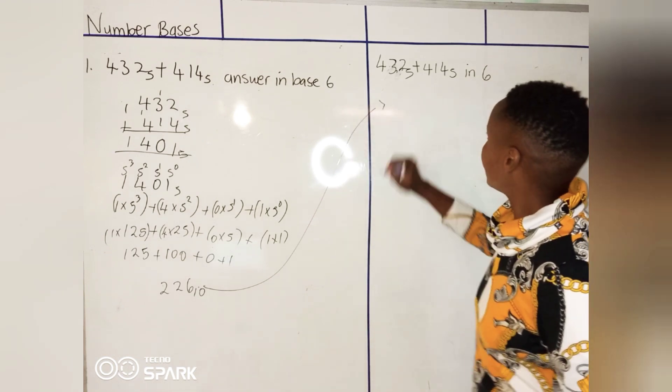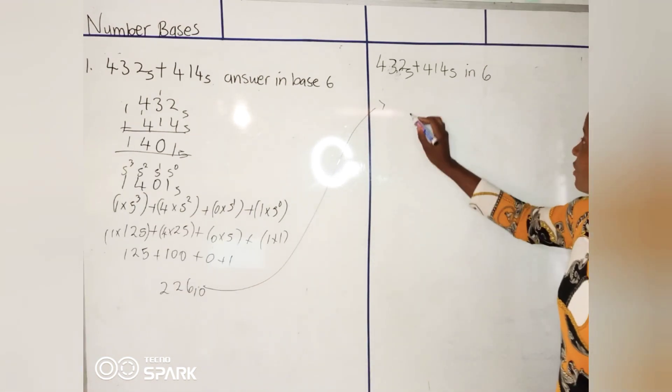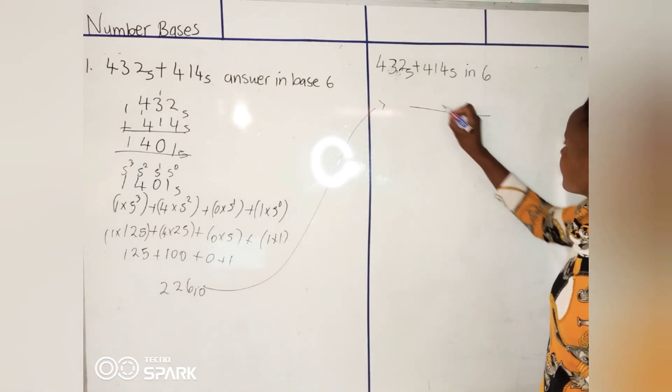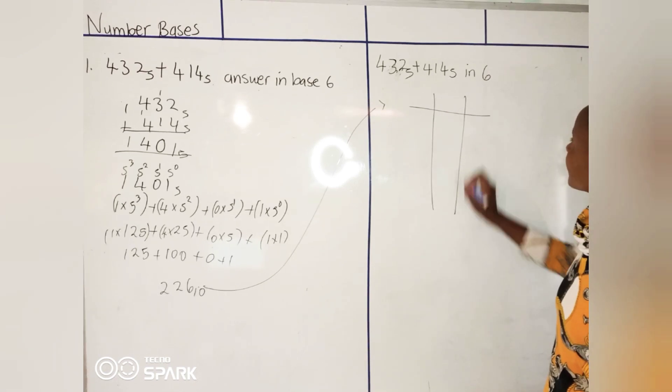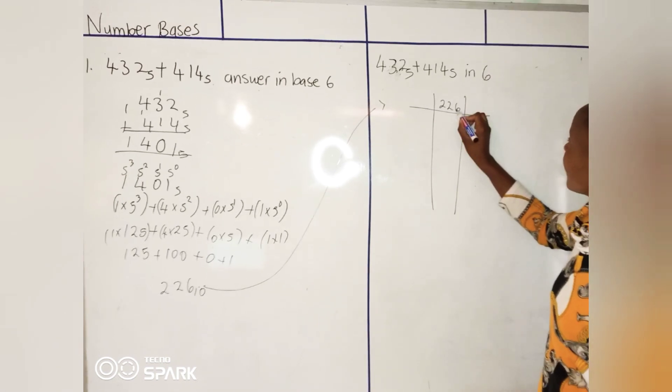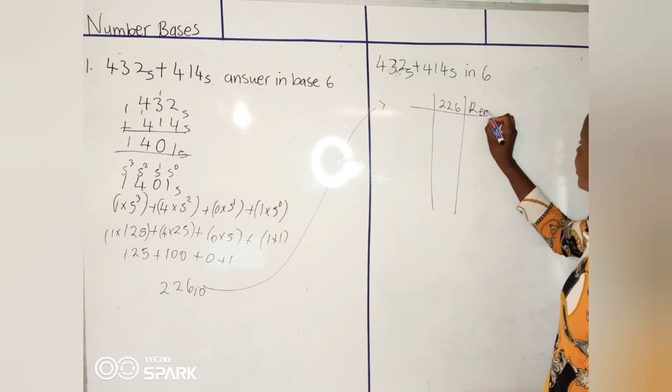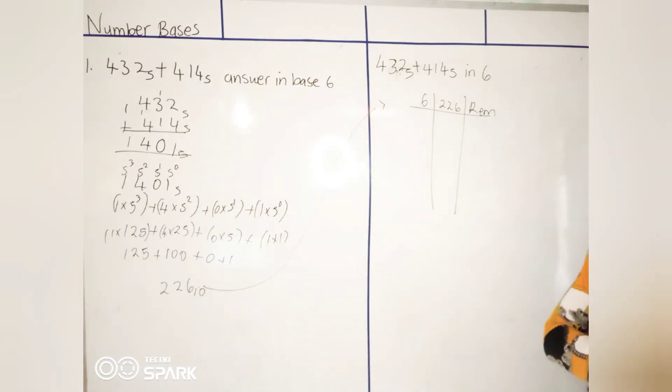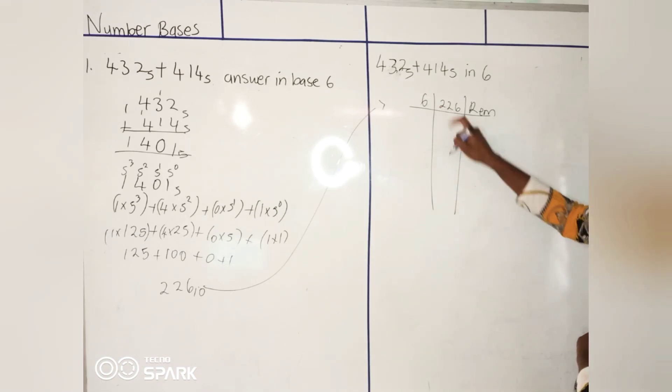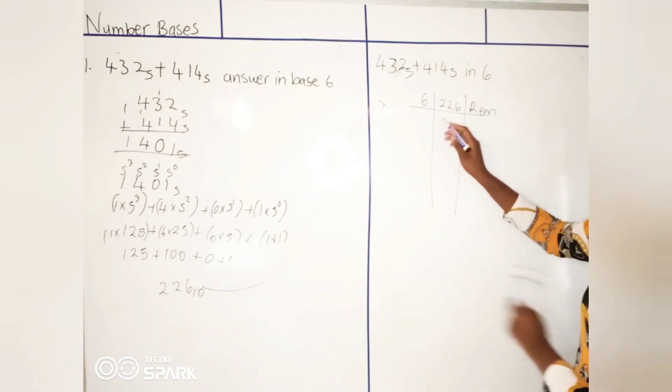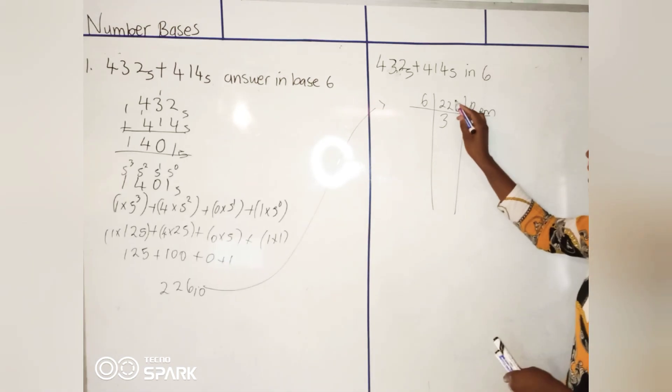So what are we going to do? Let me bring it this side. We put our 226 there, there is our remainder section. We are going to divide by 6. They want their answer in base 6. 6 into 22 is how many times? 6, 12, 18, is 3 times and remainder 4.